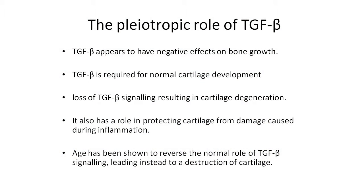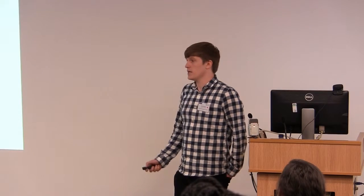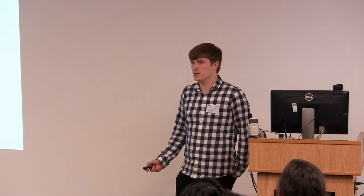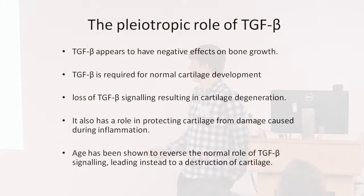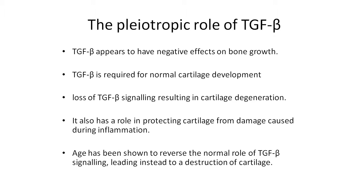TGF-beta is a pleiotropic growth factor that has a number of different roles. If you add it to bone directly, it results in the build-up of osteophytes, which cause pain and damage to cartilage. Whereas in cartilage development it's required — if you block TGF-beta signaling or remove TGF-beta from cartilage, you get chondrocyte hypertrophy and cartilage degeneration. TGF-beta also appears to have a role in protecting against inflammation, as I just showed, and this is true for a number of different inflammatory mediators.